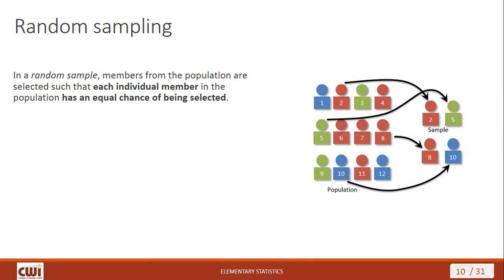First up, we have random sampling. In a random sample, members from the population are selected such that each individual member has the same chance of being selected. In the graphic, you've got people numbered 1 through 12, and we pick out numbers 2, 5, 8, and 10. Number 2 has the same chance of being selected as number 8, number 5, number 9, number 12, or number 1 — they all have an equal chance of being selected.